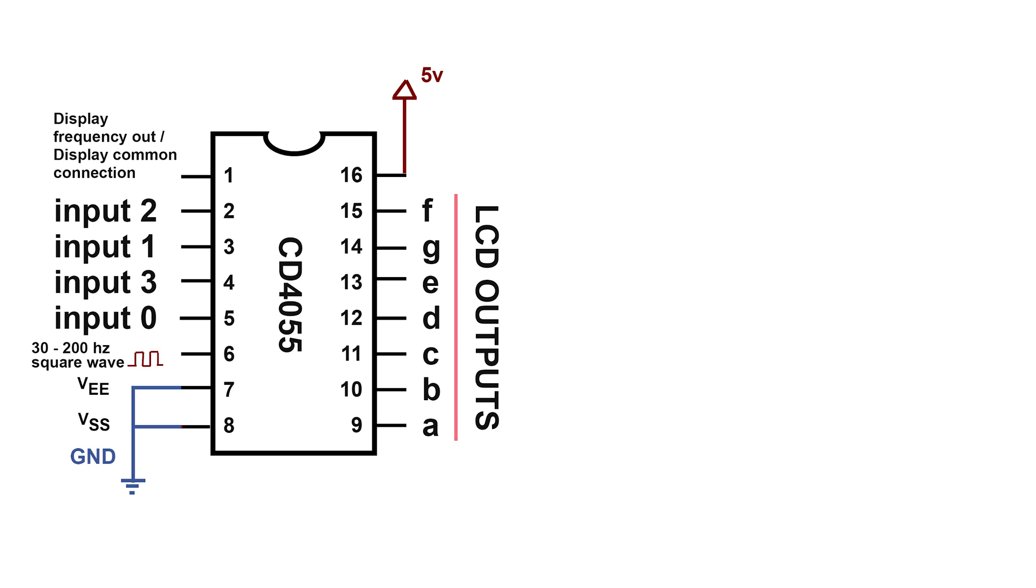If we take a look at the CD4055, we can see that it's a 16 pin IC. Pin 1 is our display frequency out, it's our display common connection. So in an LCD, you'll have a common pin.